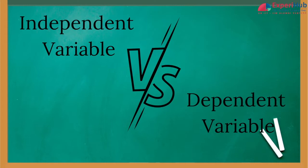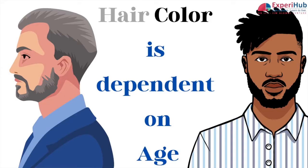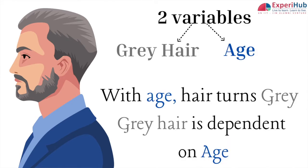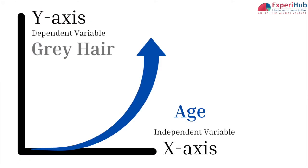What is the difference between a dependent and independent variable? If a person normally gets more grey hair with age, then the number of grey hairs is dependent on age. So we can say that grey hair is dependent on age, where age is an independent variable.